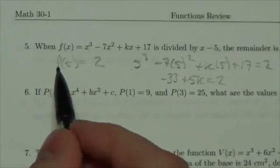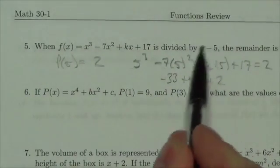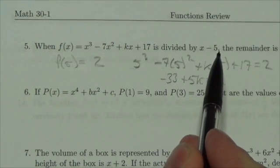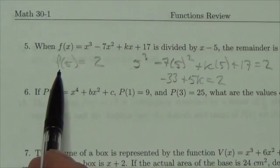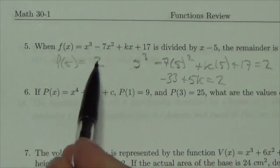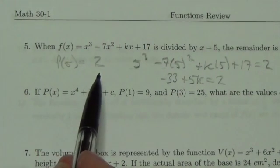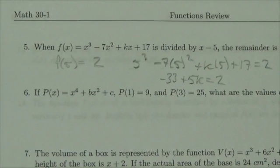We want you to know that when you're dividing, in a case like this, x minus 5, that you can just plug in that 5, and the result is the remainder when you do that division.